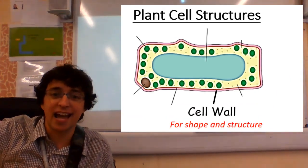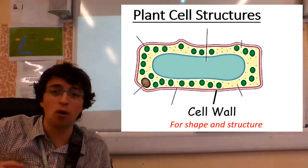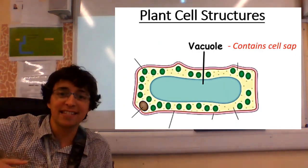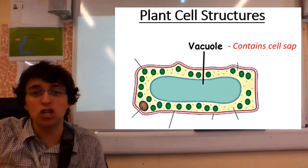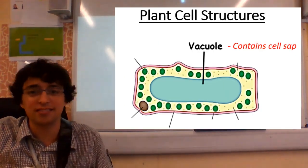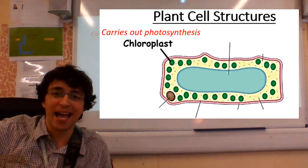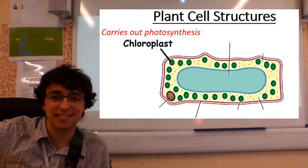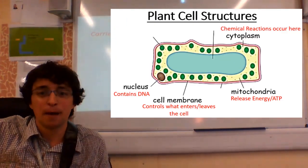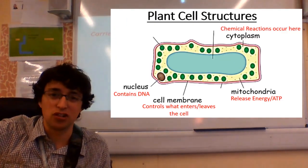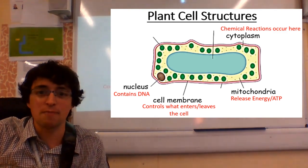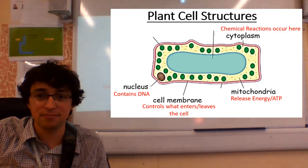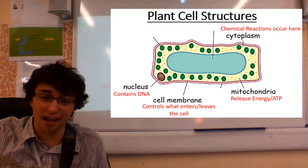Plant-cells have cell walls. Plant-cells have vacuoles. Plant-cells have chloroplasts. Plant-cells have a nucleus, membrane, and cytoplasm. Just one more time.